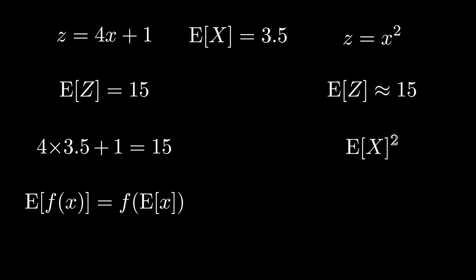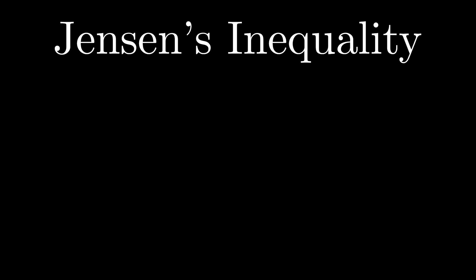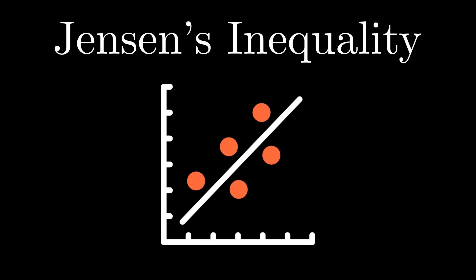In the second situation though, 3.5 squared is approximately 12. The expected value of our output is actually greater than the result we would have observed by plugging in our input's expected value into our model. Average in does not yield average out. Now I anticipated that this would happen because of Jensen's inequality, which shows up quite a bit in data science. So let's talk about Jensen's inequality, and through a neat visual and mathematical proof, demonstrate and prove why average in typically does not lead to average out.